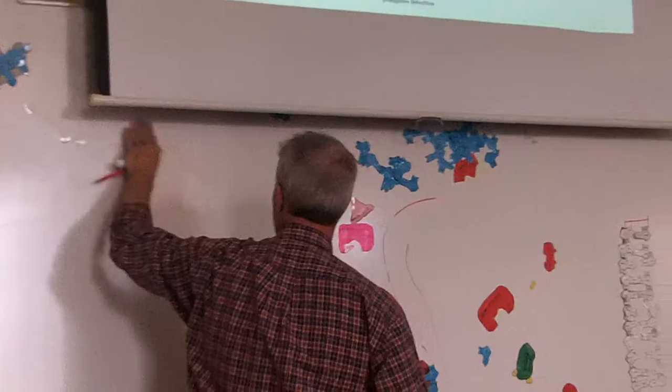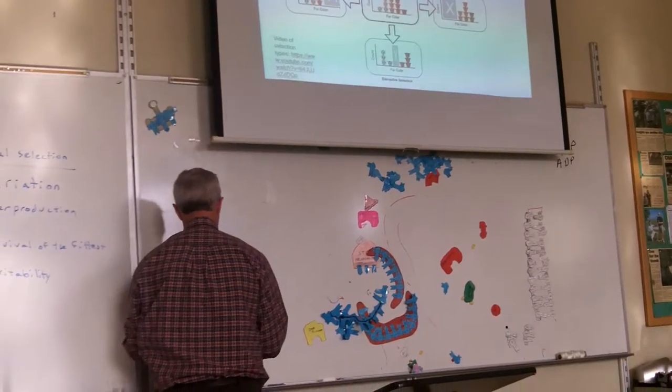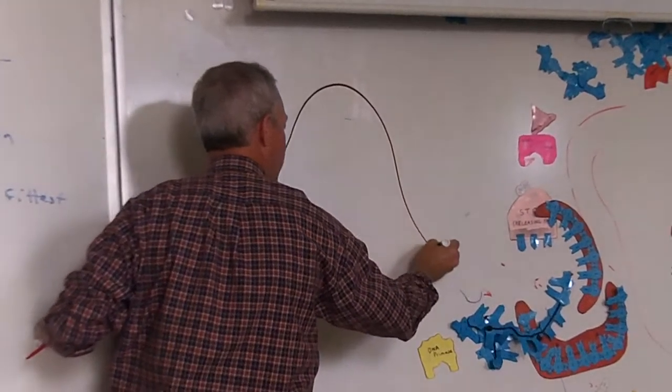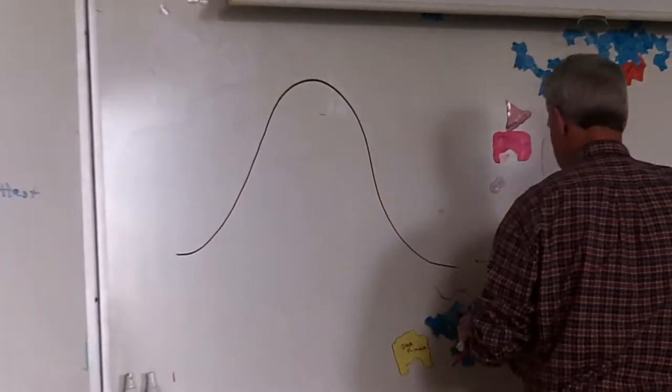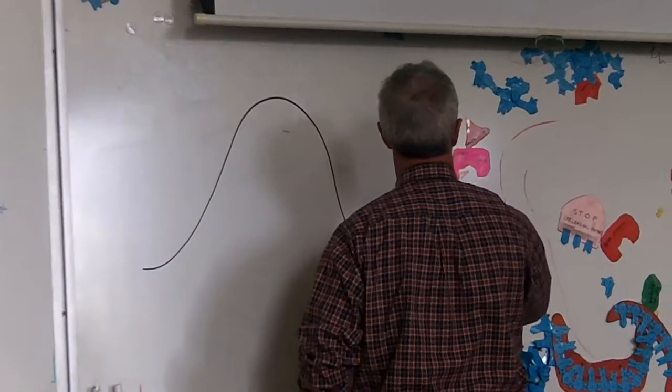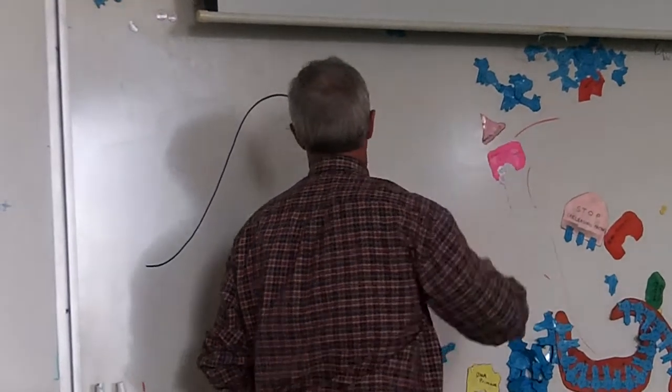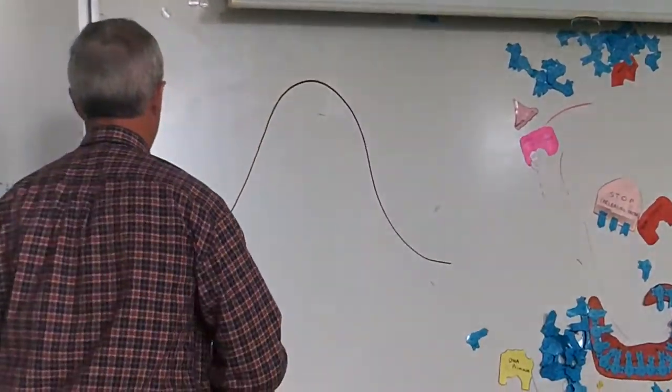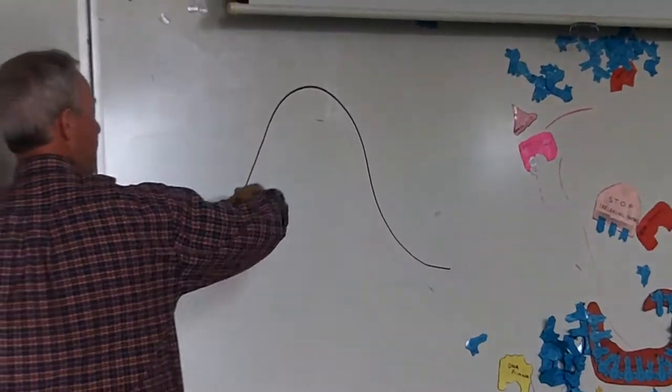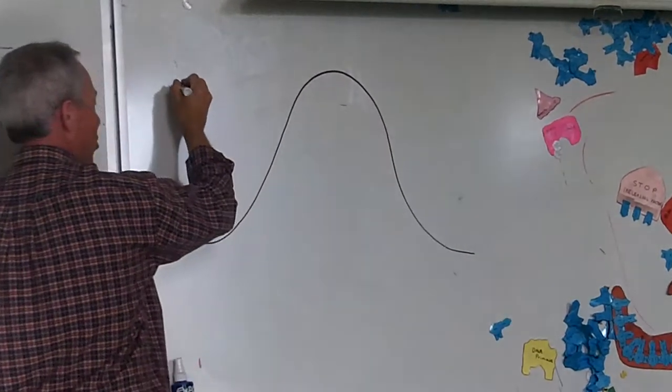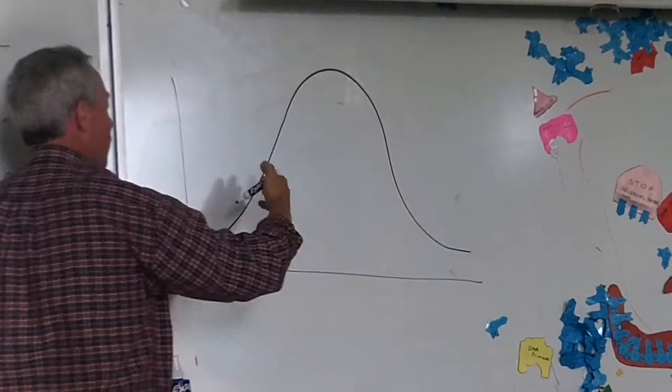The evolution, the change of the moths, they were still moths. They didn't change species, they just changed color. So there's still moths. That's microevolution. If they had changed into a new species, that'd be macroevolution. So let's take a look at how these populations can change. There are different types of selections. Now, this is new stuff. There are different types of selection that can occur in a population.